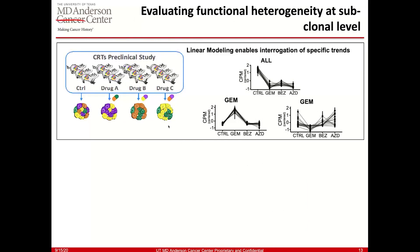After creating these clonal replica tumors, we wanted to understand how each responds to different drugs. We gave them three different drugs — gemcitabine, BEZ, and AZD — and we can see that certain subclones are sensitive to all of them; using linear modeling we can extract specific patterns. The bottom left panel shows subclones that are resistant to gemcitabine but sensitive to other drugs. The rightmost panel shows an example of clones sensitive to gemcitabine but resistant to others.